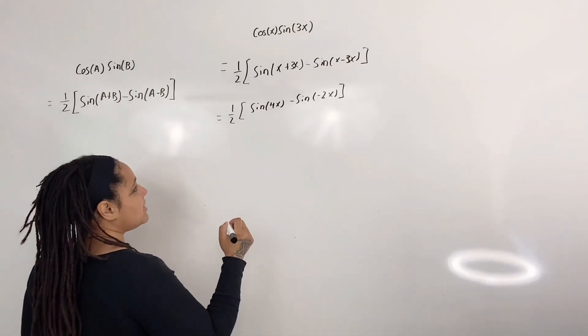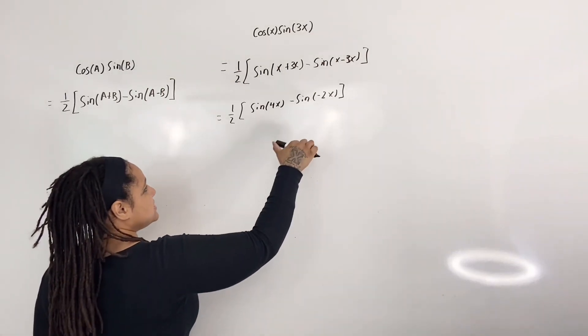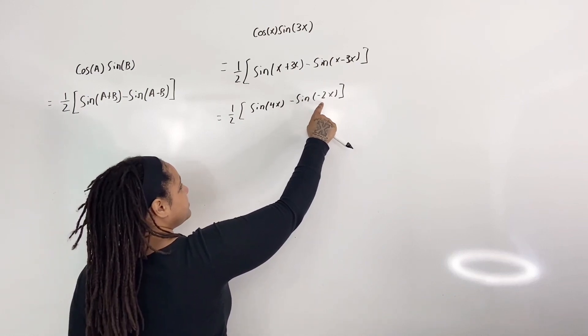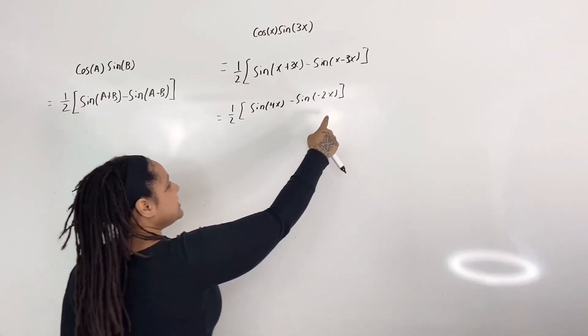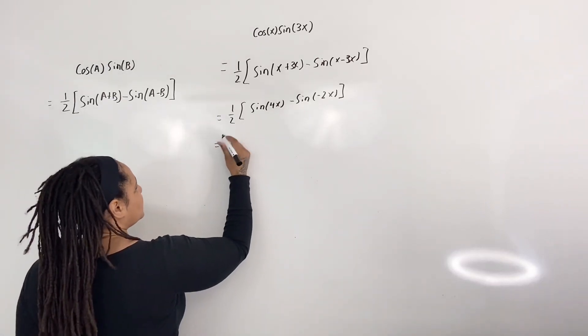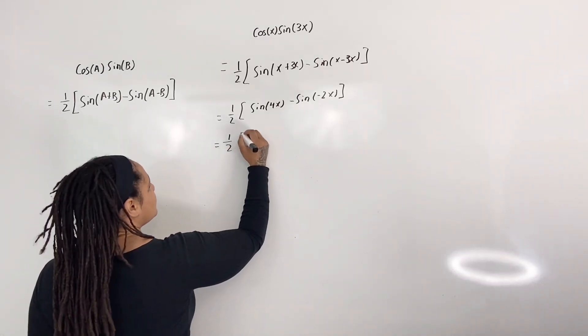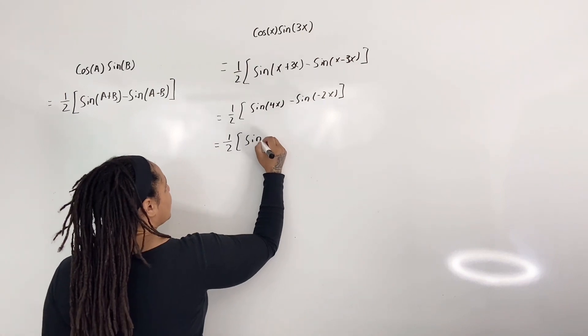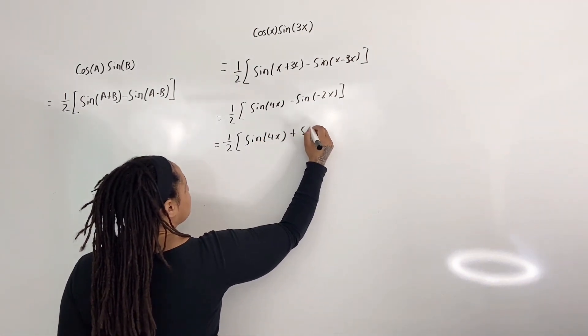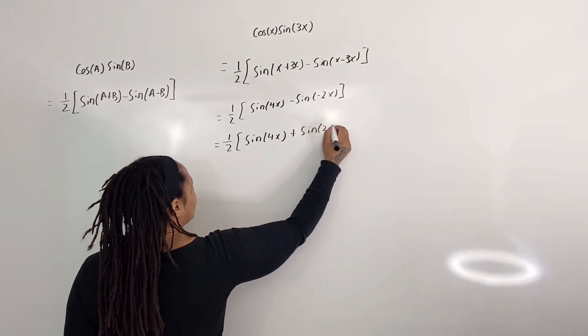And by the odd identity, we know that I can take the negative sign inside the function and pull it out. So this is equal to one-half times sine of 4x plus sine of 2x.